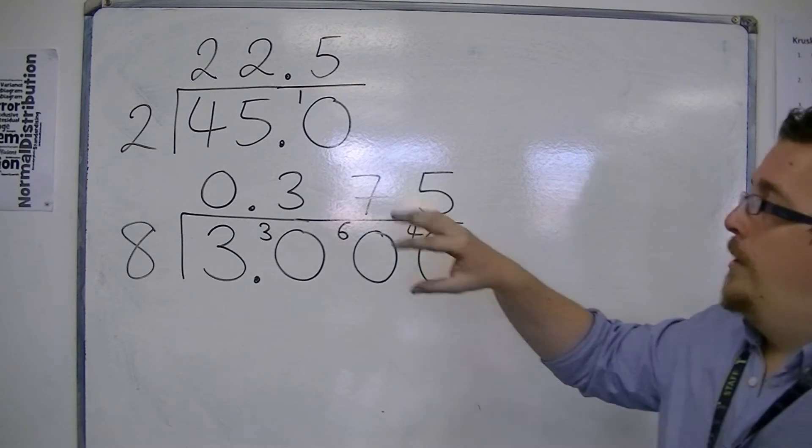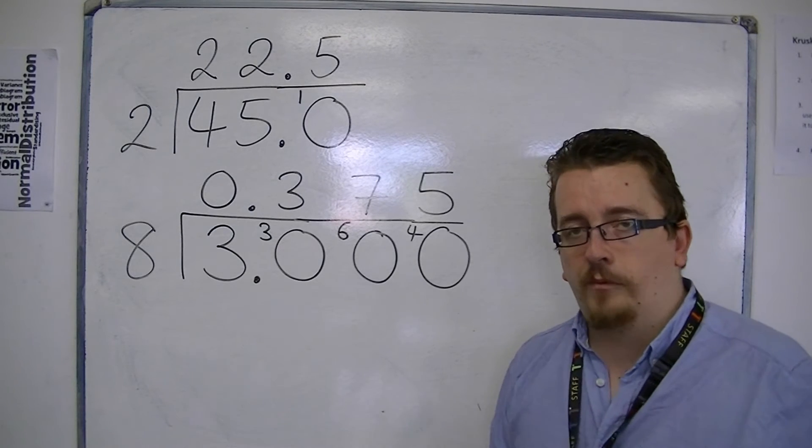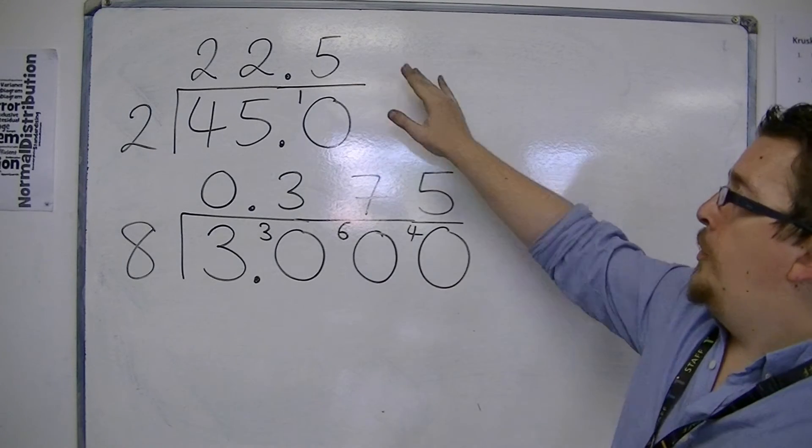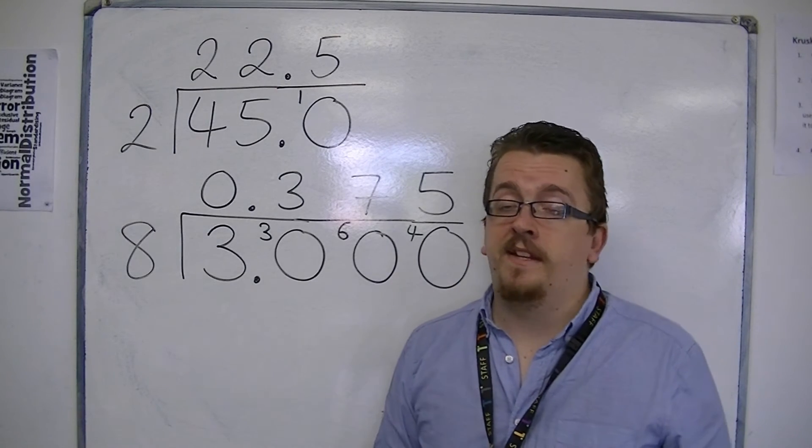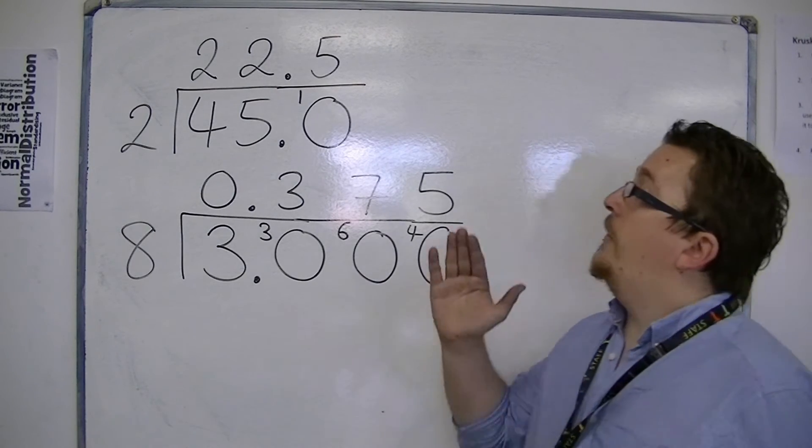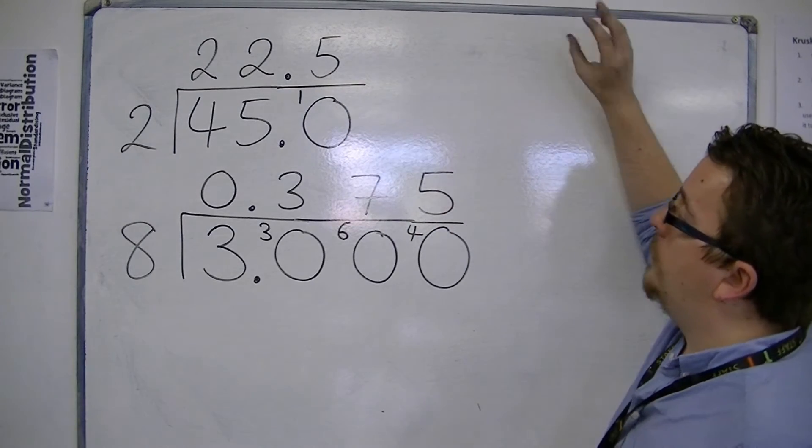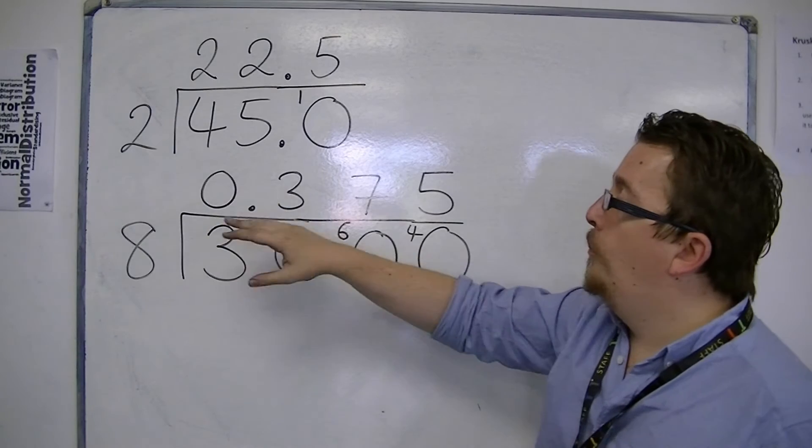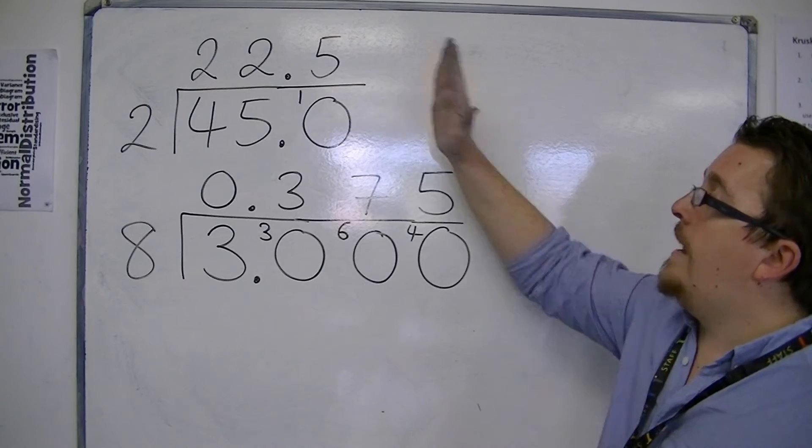So both of these show that you can use short division to go into decimals. Both of our answers here are referred to as terminating decimals because they end. 22.5, there's nothing left on the right. 0.375, there's nothing here but 0s. So they just end.